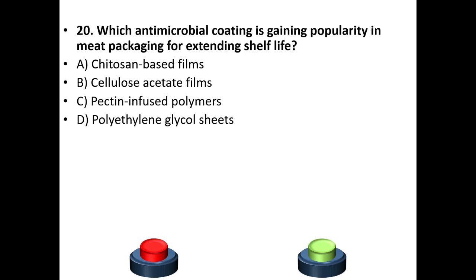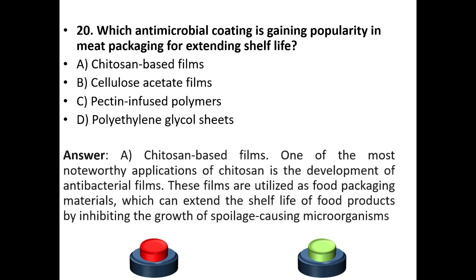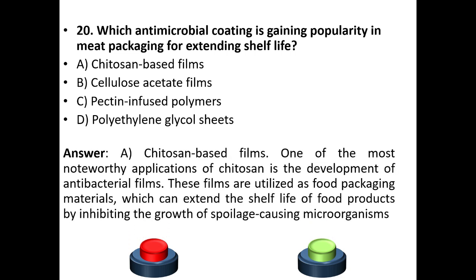Twentieth question: Which antimicrobial coating is gaining popularity in meat packaging for extending shelf life? Options: chitosan-based films, cellulose acetate films, pectin-infused polymers, polyethylene glycol sheets. The answer is option A — chitosan-based films. One of the most noteworthy applications of chitosan is the development of antimicrobial films used as food packaging material, which extend shelf life by inhibiting the growth of spoilage-causing microorganisms.